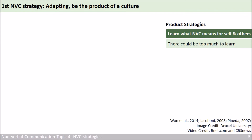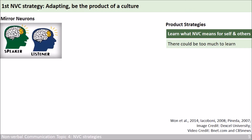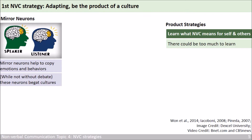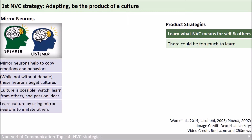Another way to adapt and be the product of a culture is by making use of the mirror neurons. These are crucial neurons that help us copy the emotions and behaviors of other people. While there is still debate about the role of mirror neurons, some scientists have suggested that these neurons begat culture — because culture is only possible when you watch, learn from each other, and pass on ideas. In order to survive, a human would learn the culture by using mirror neurons to imitate others: learning what to eat, when to agree or disagree, or which values to keep.